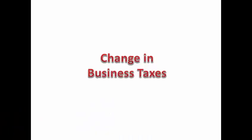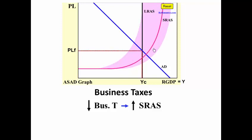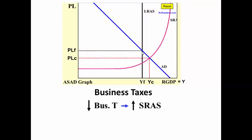A change in business taxes is different than a change in personal income taxes. The government can stimulate the economy by changing business taxes. If the government lowers business taxes, this will shift the short-run aggregate supply curve to the right.